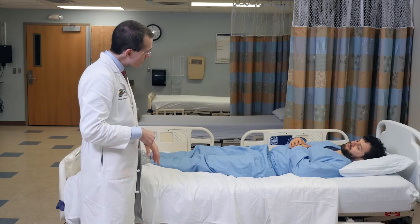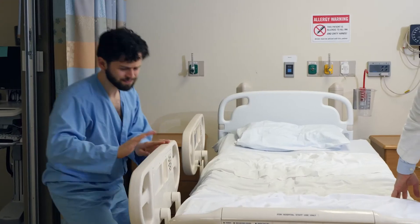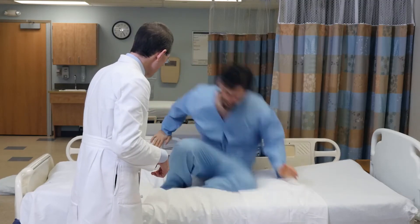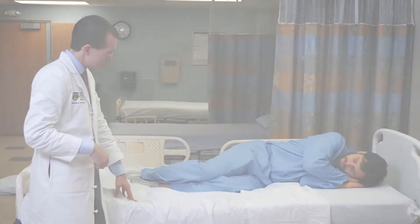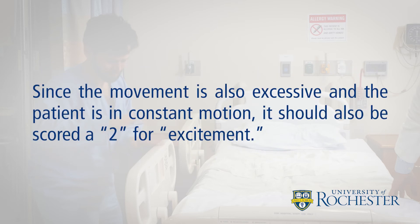Hi, good morning Tom. This patient is performing a continuous series of distinct activities, impulsively shifting from one activity to the next. Presuming he continues this for the entirety of the evaluation, it should be scored a 3 for constant impulsivity. Since the movement is also excessive and the patient is in constant motion, it should also be scored a 2 for excitement.